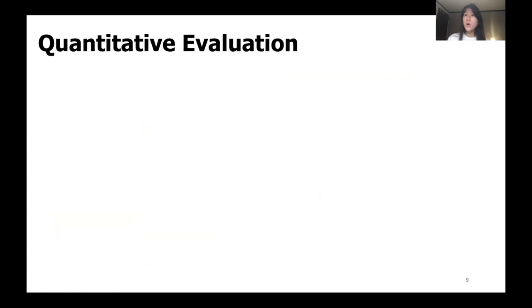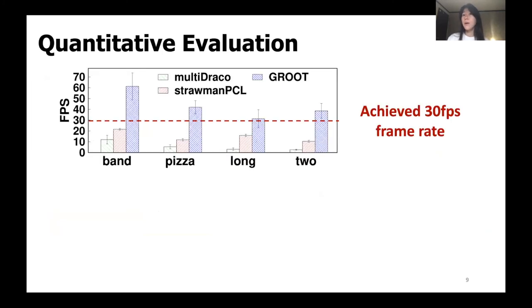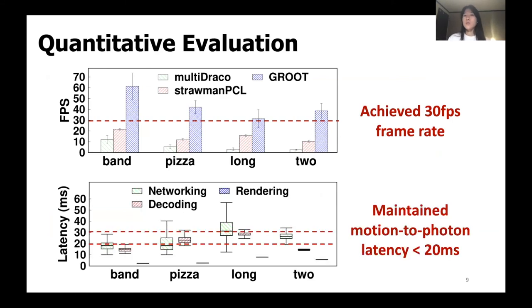Here we show some quantitative results of the performance of GROOT. This graph shows the frame update rate, which includes receiving the frame through the wireless network, decoding and rendering them on the device for different data sets. It shows that our system can achieve 30 fps frame rate for all data sets. Next, this graph shows the latency breakdown results with minimum, average and maximum values for each component. The result shows that decoding is no longer the bottleneck, and the rendering latency remains well below the motion to photon latency of 20 milliseconds.